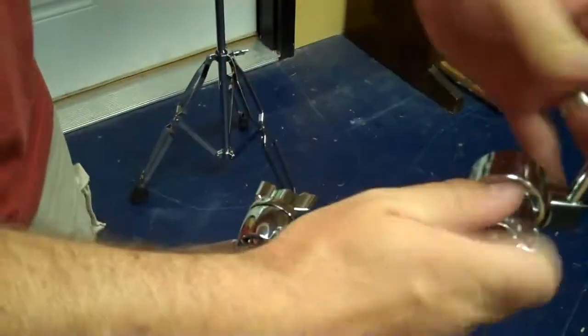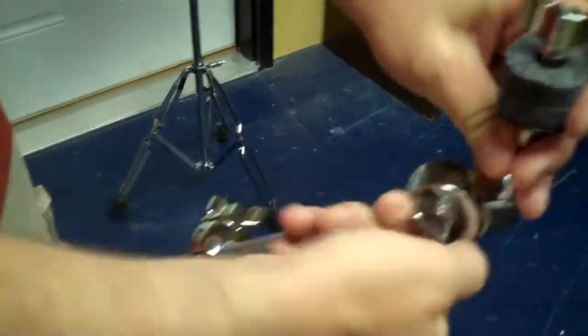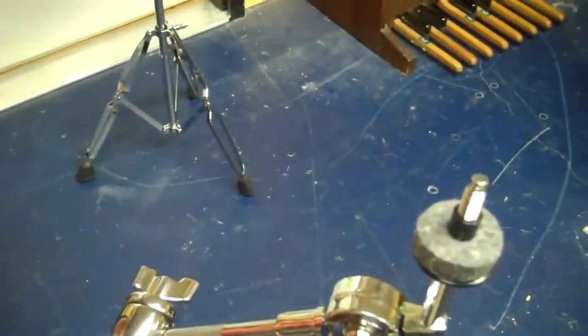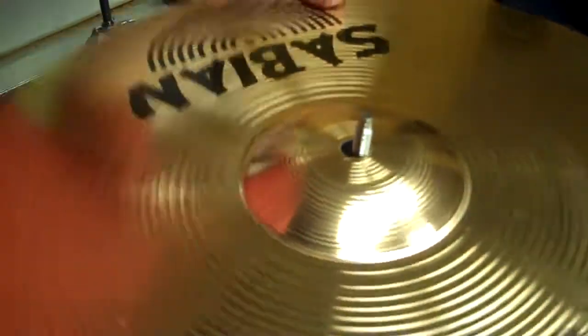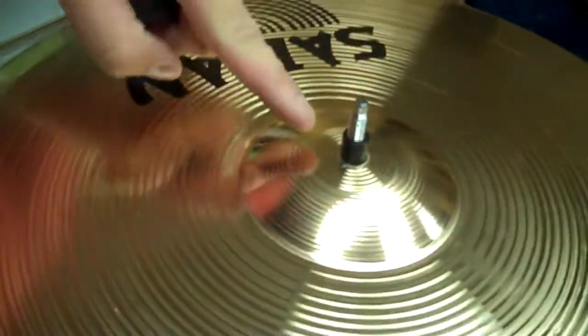So I'm going to put a crash cymbal on here. Everything is just like the last stand I talked about. Got a piece of felt underneath, got a plastic sleeve, piece of felt on top, wing nut on top.